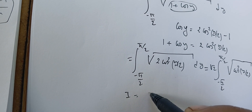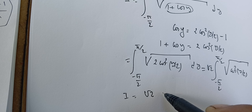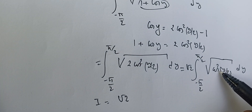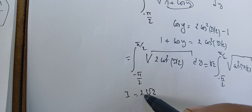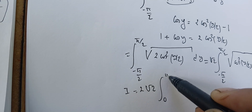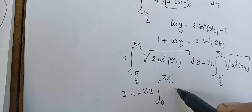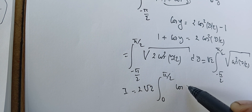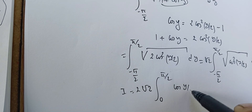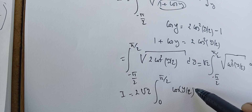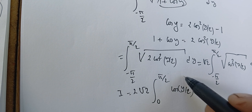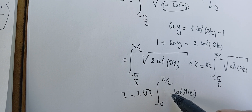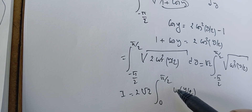Now I notice that this function is even, so I can multiply by 2 and integrate between 0 and pi over 2 instead. The square root of cosine squared of y over 2 gives the absolute value of cosine of y over 2. I did not write the absolute value explicitly because between 0 and pi over 2, the cosine is always positive.